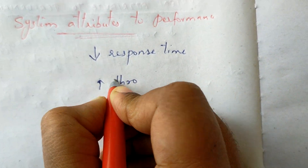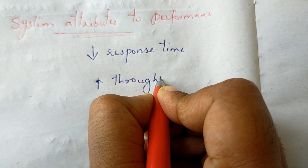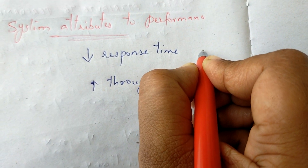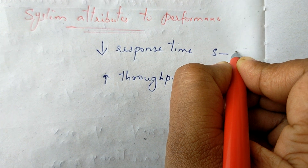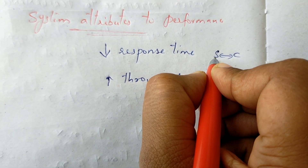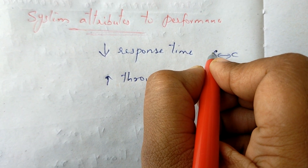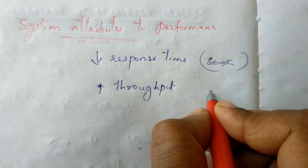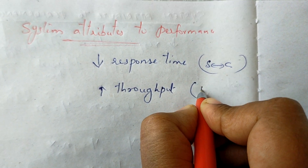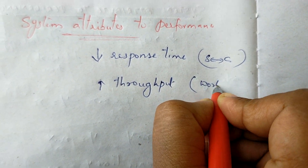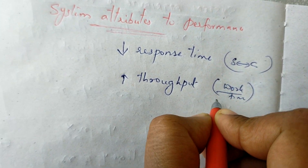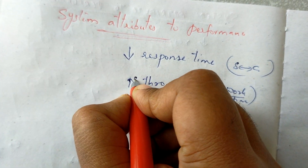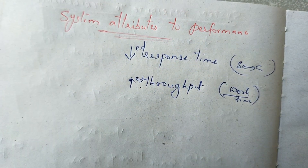How do we increase throughput? Response time is the time between the start and completion of a particular event. Throughput is the total work done in a given time.